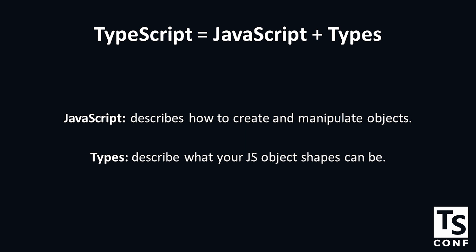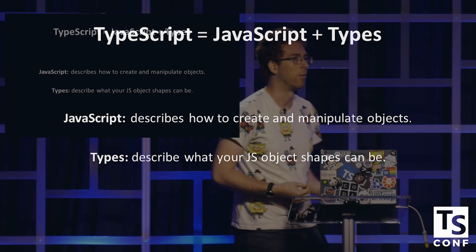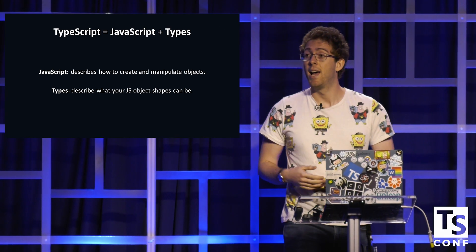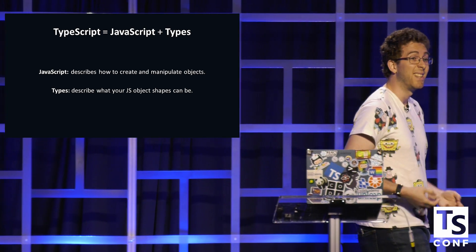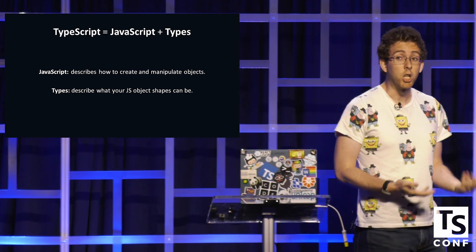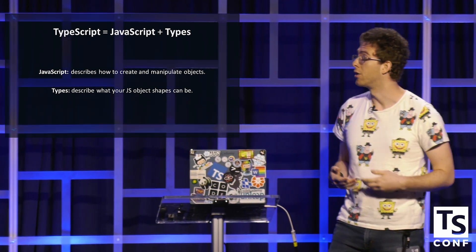It tells the browser, Deno, Node, whatever, these are objects, I'd like to manipulate them. And then it also has this awesome type system in it, this type language that declares, I have these expectations for my object shapes. These are how they're going to look and these are how they're going to behave.